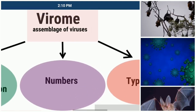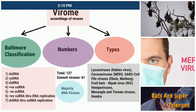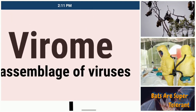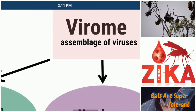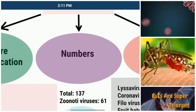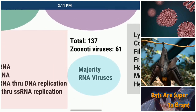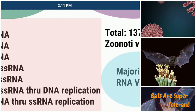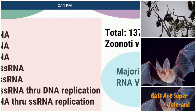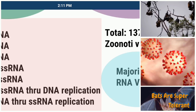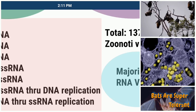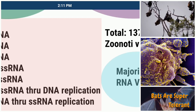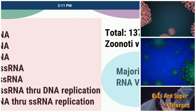Next is the virome of bats. We study the Baltimore Classification — the numbers and types of viruses. The virome is the assemblage of viruses in each bat. The Baltimore Classification has seven types, and all these seven types exist in bats — double-stranded DNA, single-stranded RNA positive sense, single-stranded RNA negative sense, single-stranded RNA positive sense through DNA replication, and double-stranded DNA through single-stranded RNA replication.